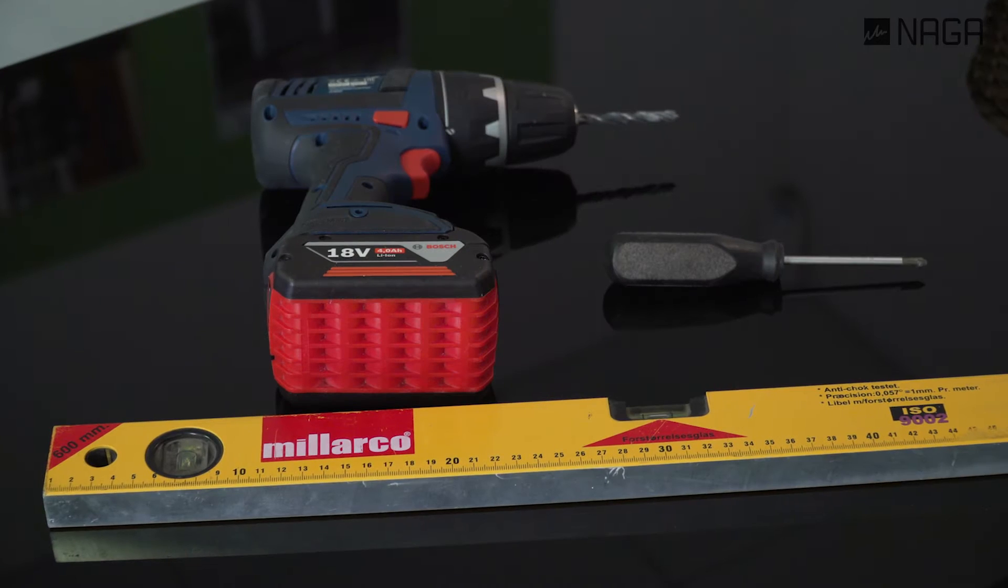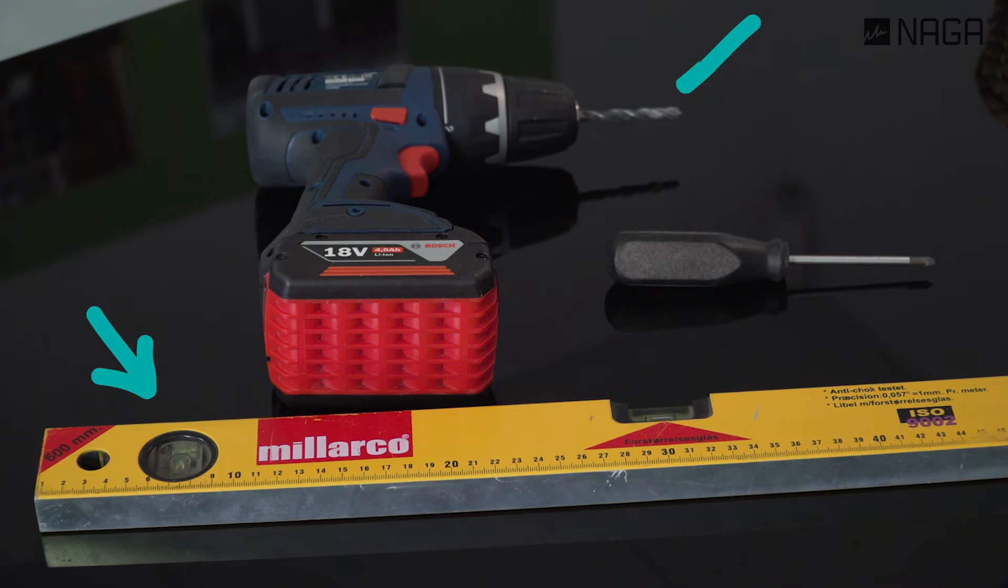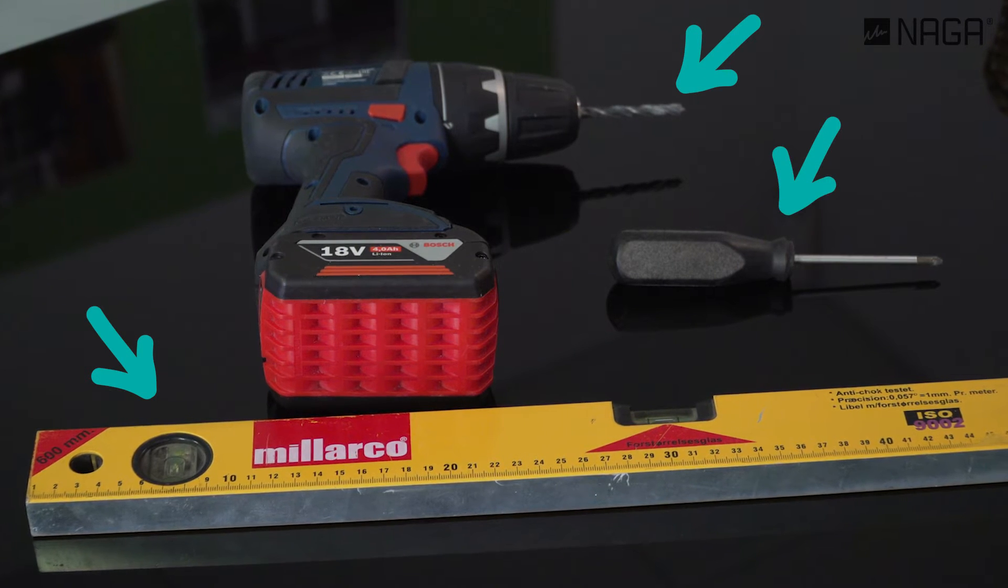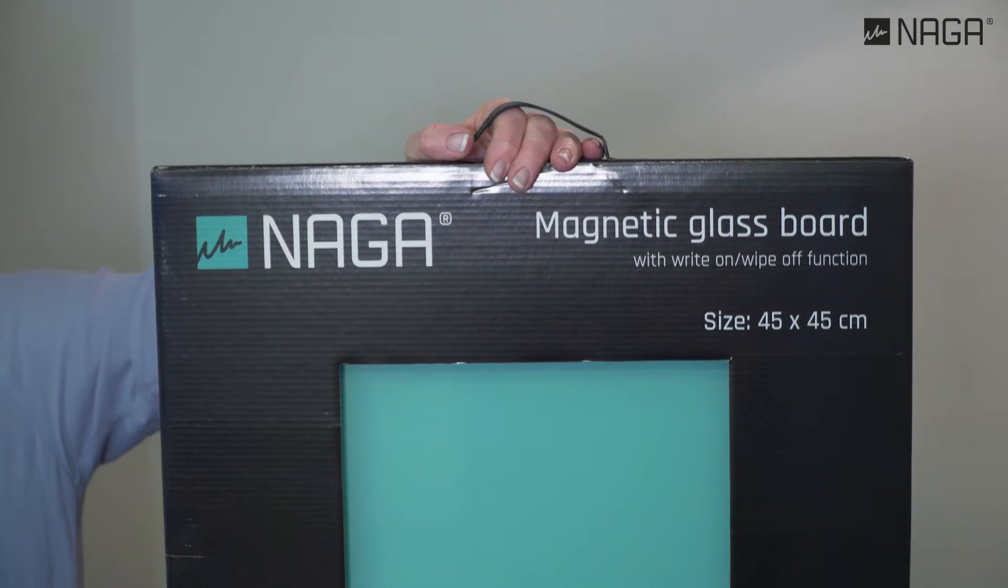It's easy to install your Naga glass board on the wall. All you need are a spirit level, a drill and a screwdriver. All other items are included in the box.